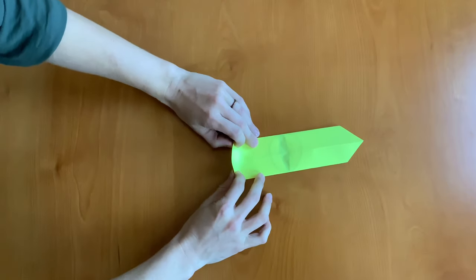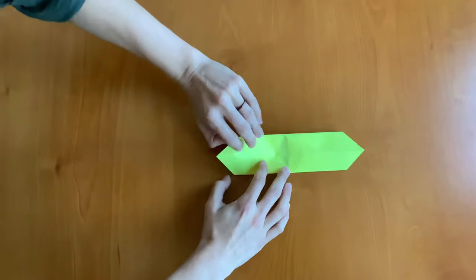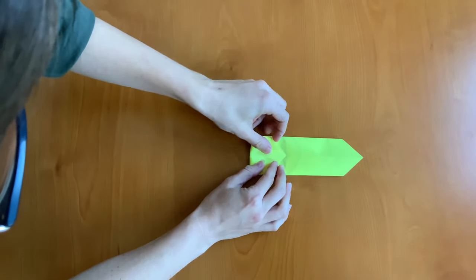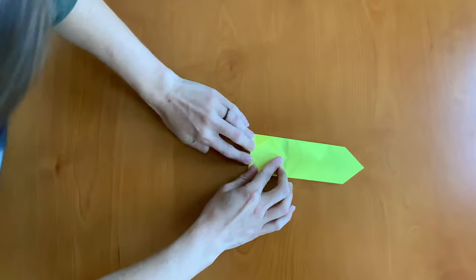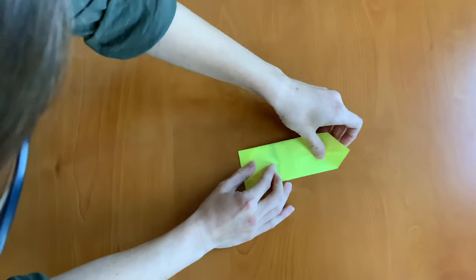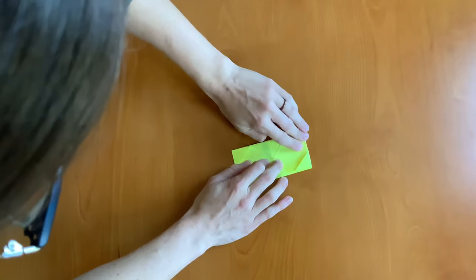Next, we're going to fold the left corner and the right corner into the center. So the left corner first, just to that center point. And the right corner again to that center point meeting in the middle.